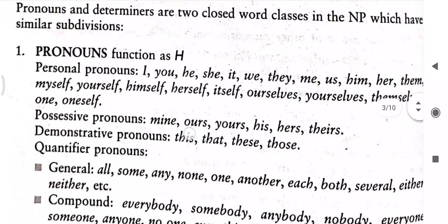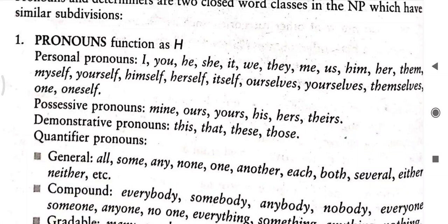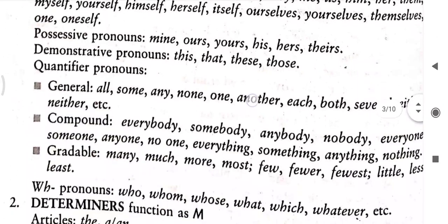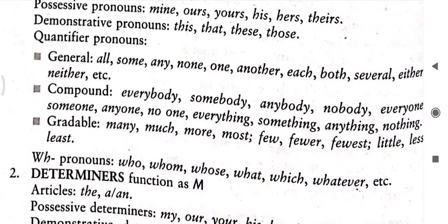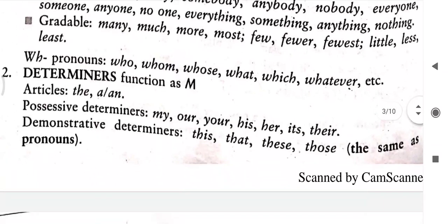Compound pronouns include everybody, somebody, anybody. Gradable quantifiers include: many, much, more, most, few, fewer, fewest, little. WH-pronouns include: who, whom, whose, what, which, whatever. These pronouns stand for nouns and function as head. Determiners function as modifiers. Articles — the, a, an — are determiners. Possessive determiners: my, our, your, his, her. Demonstrative determiners: this, that, these, those.